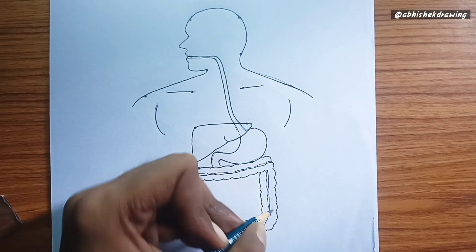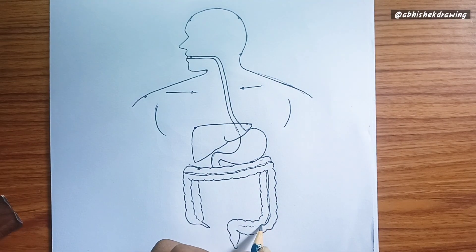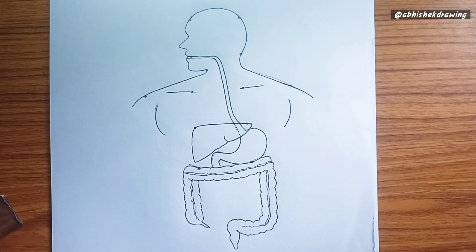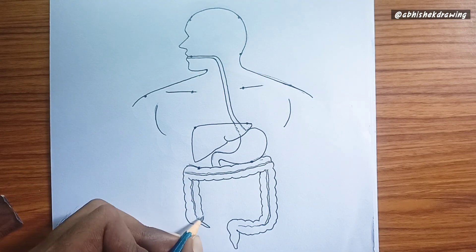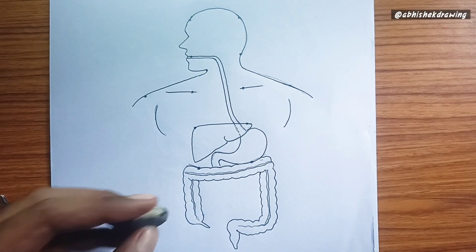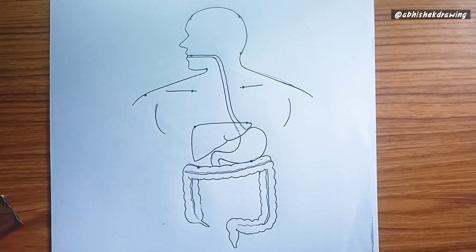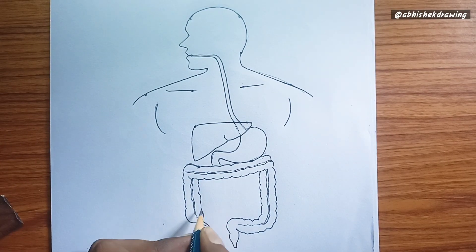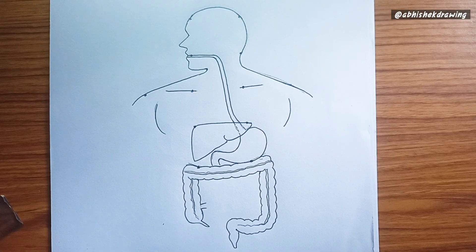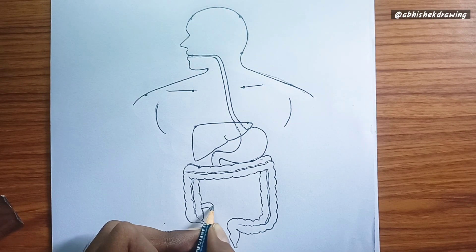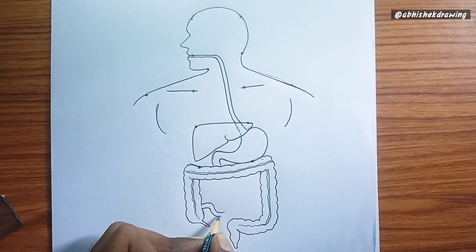The human digestive system is a complex process that breaks down food into nutrients the body can absorb for energy, growth, and repair. It's essentially a long tube — the gastrointestinal GI tract — running from the mouth to the anus, aided by accessory organs.